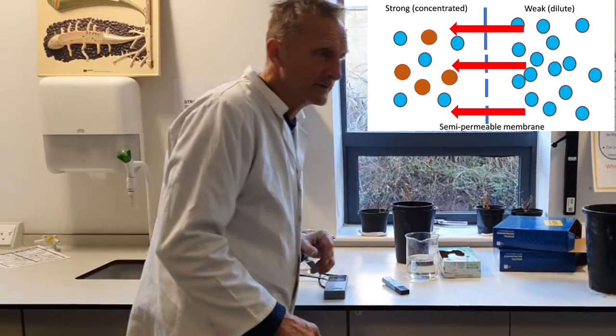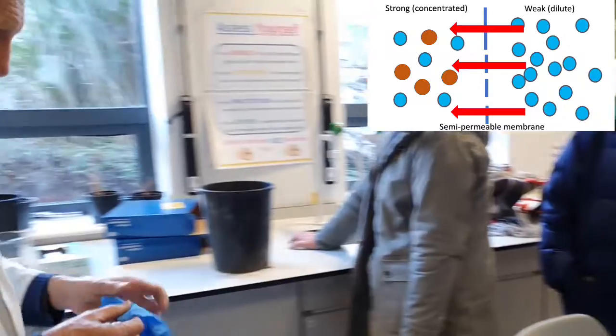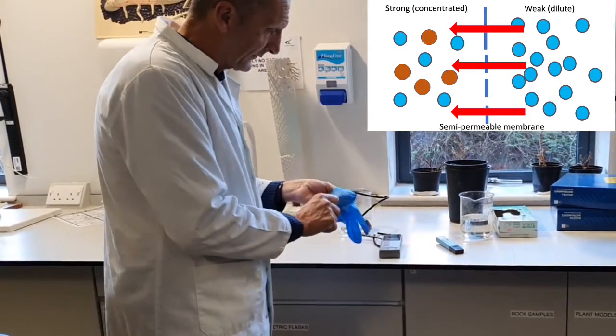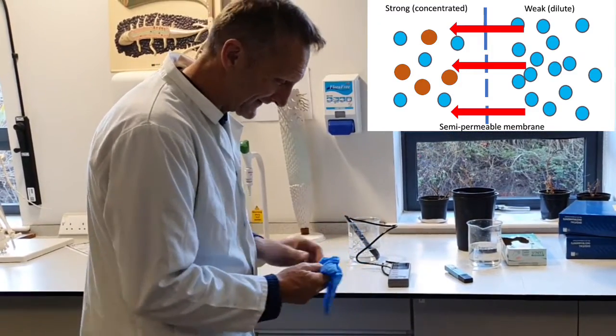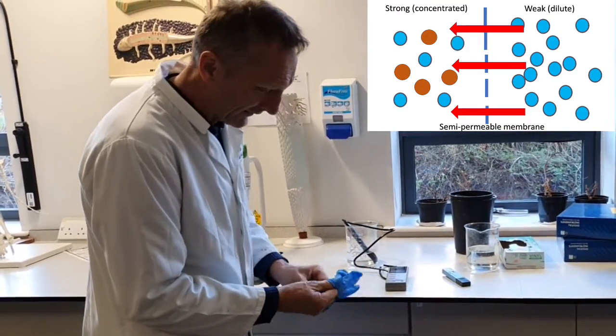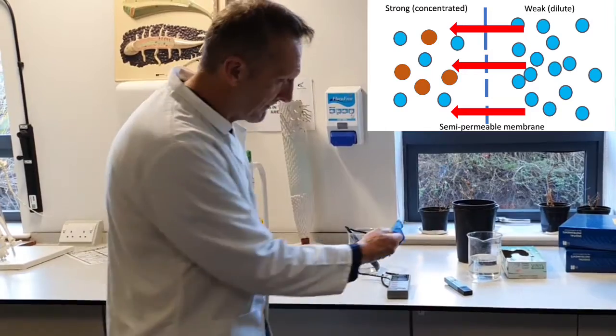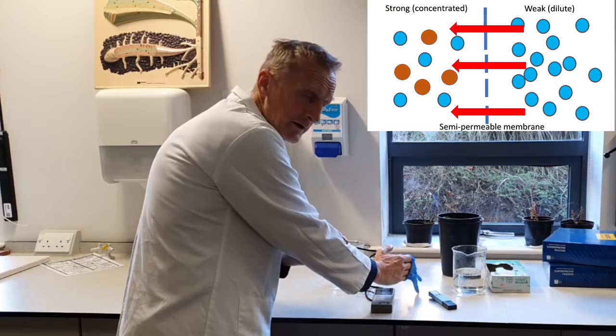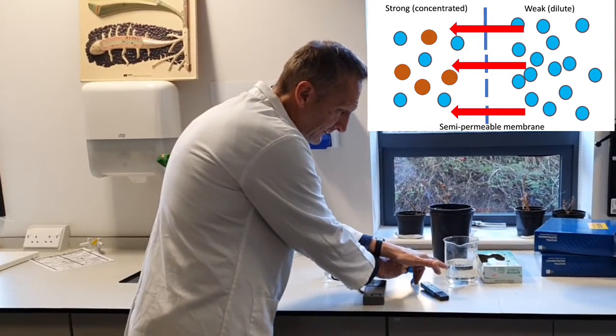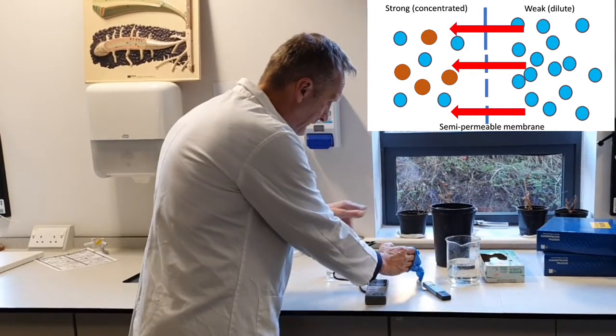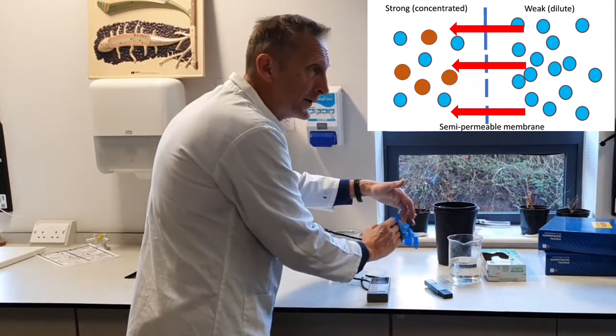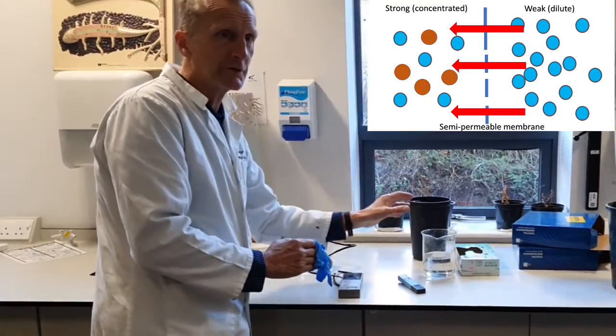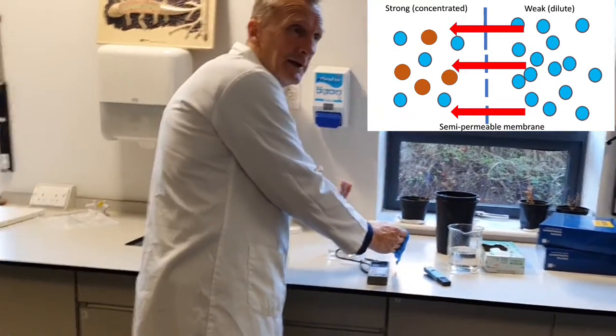The way it works—imagine this is the plant, a plant cell. The plant cell has a membrane around it. Osmosis is the passage of water from a weak or dilute solution to a strong solution through a semi-permeable membrane.